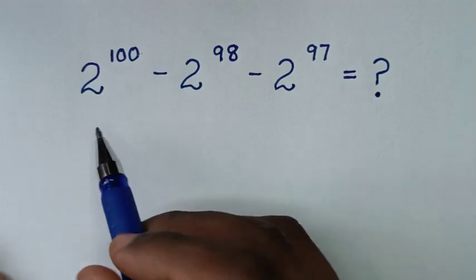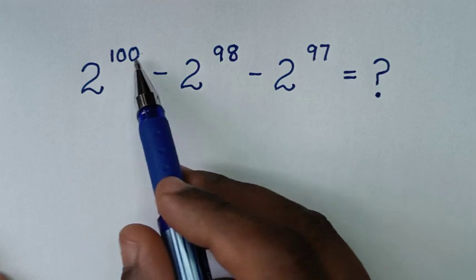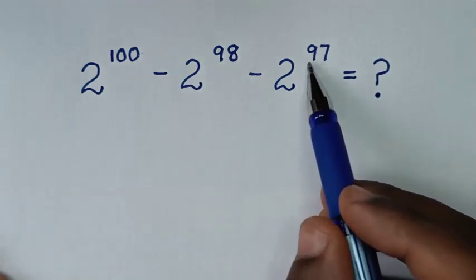Hello, you are welcome to solve this math problem which is 2 power of 100 minus 2 power of 98 minus 2 power of 97.